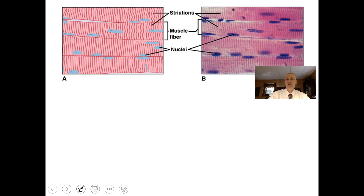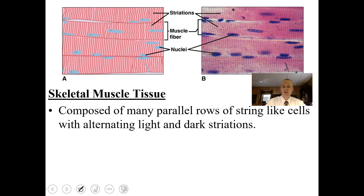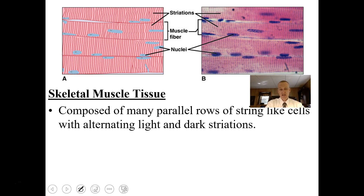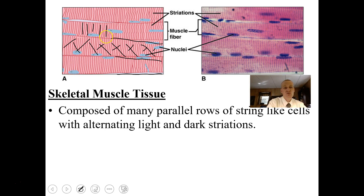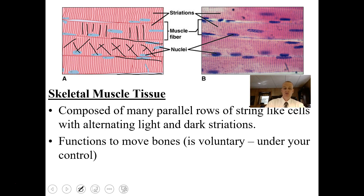Skeletal muscle tissue is composed of many parallel rows of string-like cells that have alternating light and dark striations. Each one of these is a muscle cell — also called a muscle fiber, interchangeable terms. They are multi-nucleated, with more than one nucleus in each cell, and they're really long and large cells. They function to move bones and they're voluntary — under your control.